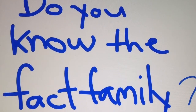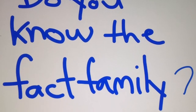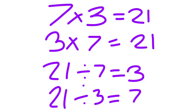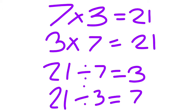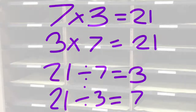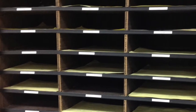Do you know the fact family? Seven times three equals twenty-one. Three times seven equals twenty-one. Twenty-one divided by seven equals three. And twenty-one divided by three equals seven.